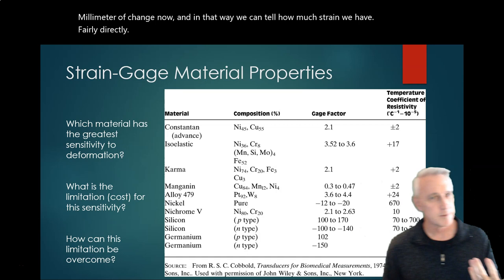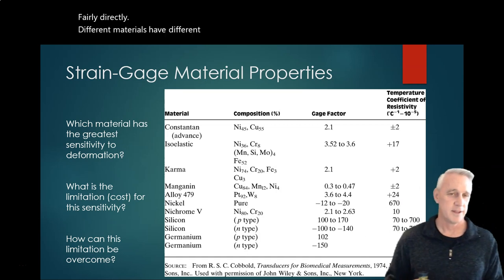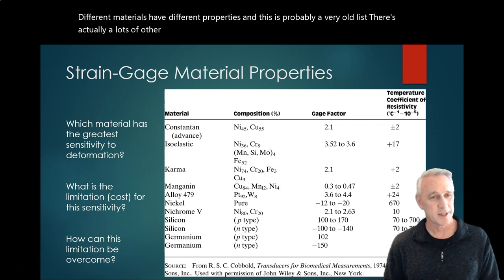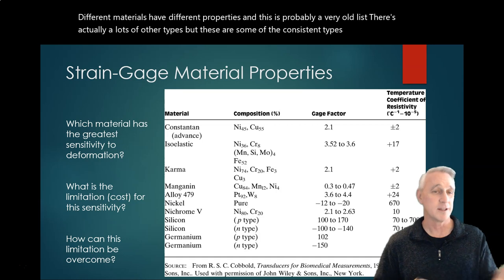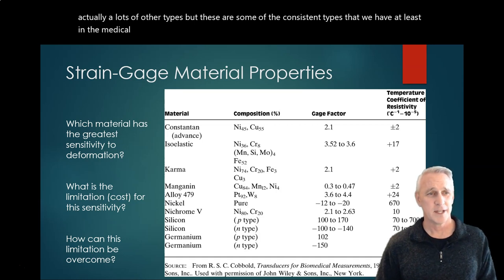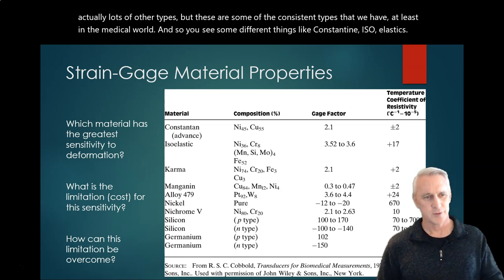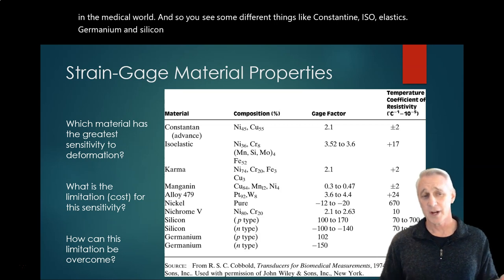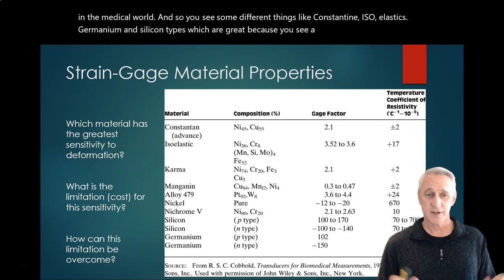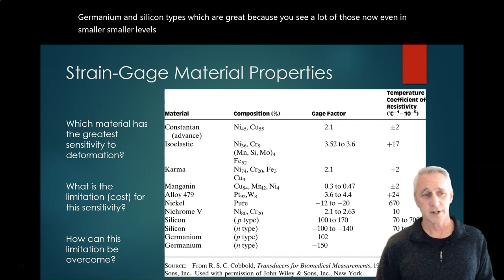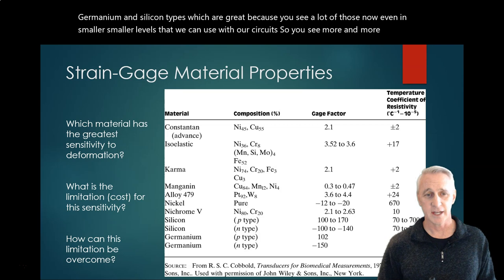Now, different materials have different properties, and this is probably a very old list. There's actually lots of other types, but these are some of the consistent types that we have, at least in the medical world. And so you see some different things like constantine, isoelastrix, germanium, and silicon types, which are great because you see a lot of those now, even in smaller levels that we can use with our circuits. So you see more and more types of materials like that.